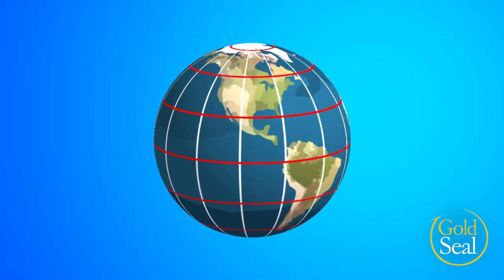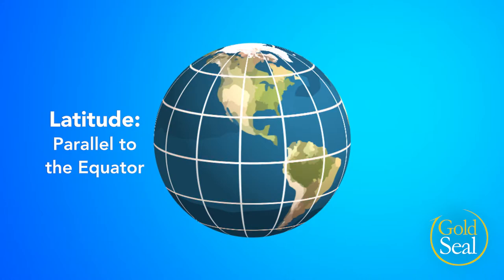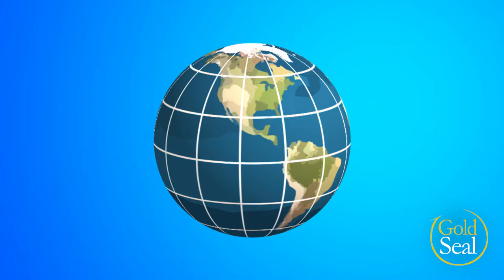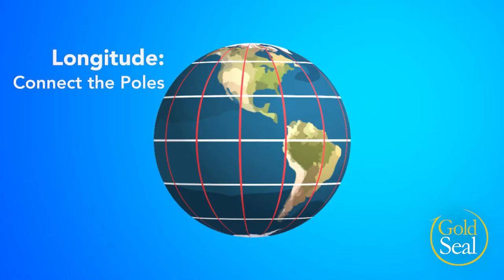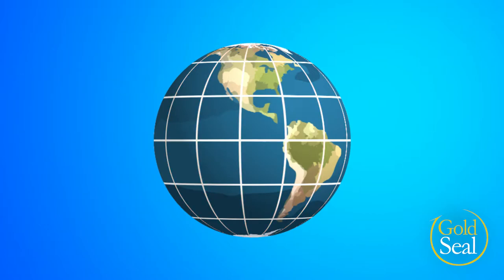Lines of latitude circle the globe parallel to the equator. On charts, they are the horizontal lines — think of the word 'lateral' to describe their lateral or sideways orientation. Lines of longitude connect the north and south poles and are shown on charts as vertical lines. Lines of latitude and longitude are perpendicular to each other, and we can specify any point on Earth by the intersection of a line of longitude and a line of latitude.